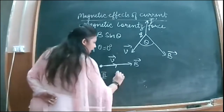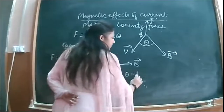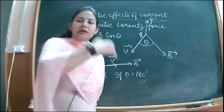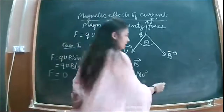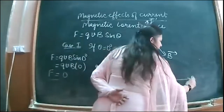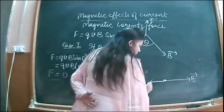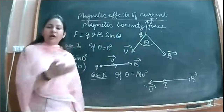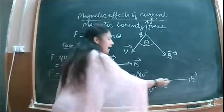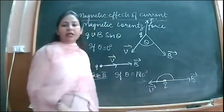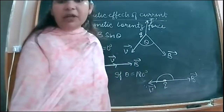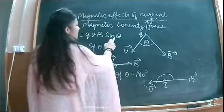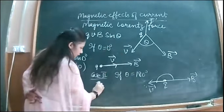Case 2: if theta is 180 degrees. Theta equal to 180 degrees means the charged particle is moving anti-parallel to the magnetic field — it is going away from the direction of the magnetic field. The angle between v and B is 180 degrees, meaning they are moving in opposite directions.